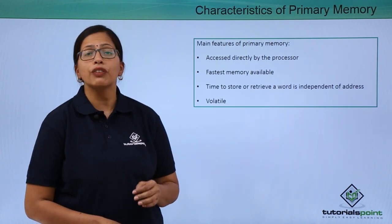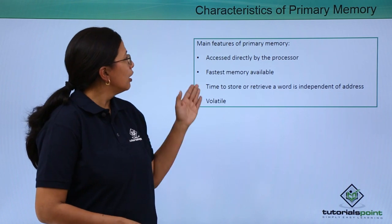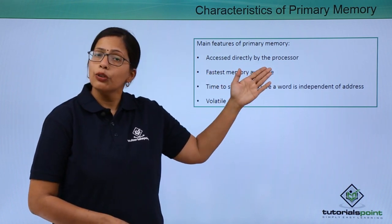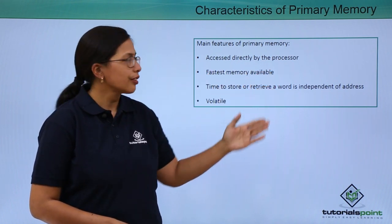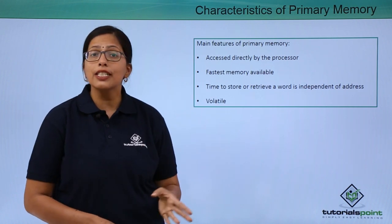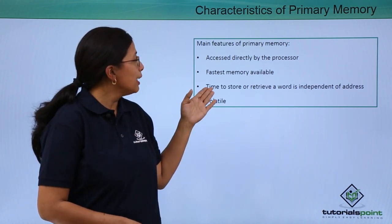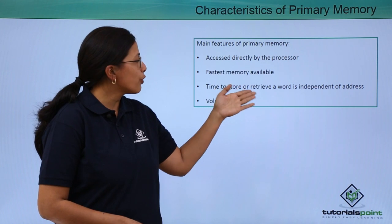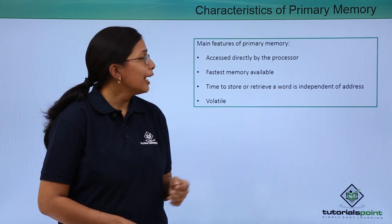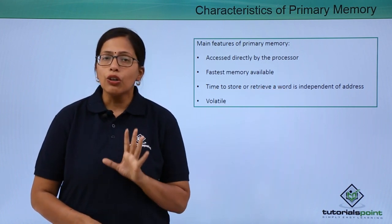Let's look at the characteristics of the primary memory. It can be accessed directly by the processor. It is the fastest memory available. The time to store or retrieve a word is independent of the address.